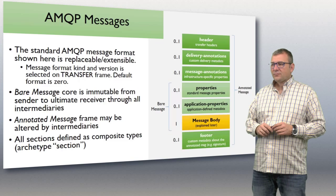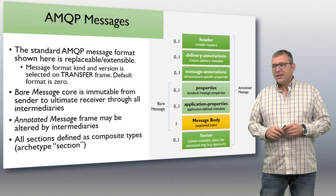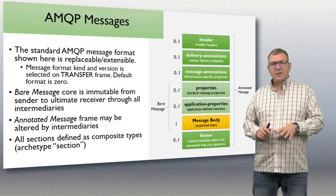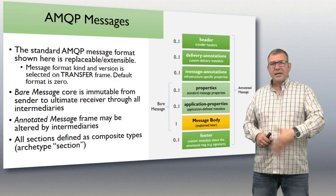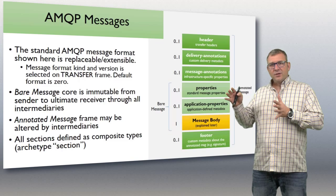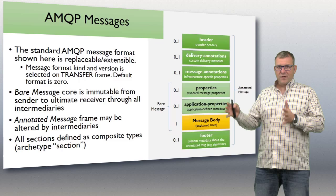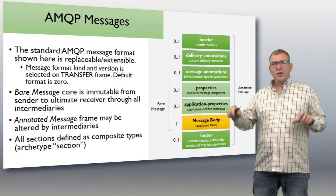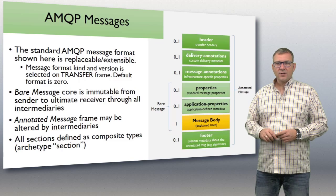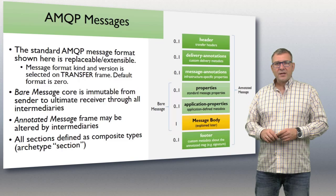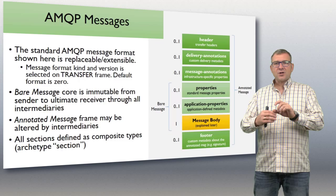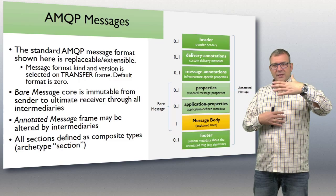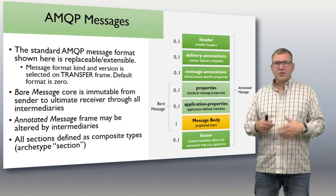An AMQP message has a standard message format, and the message format shown here is actually replaceable and extensible. Extensibility in AMQP goes so far that the standard message format can be swapped out for a different one. Foundationally, there's a frame transfer protocol under the covers, and a message transfer protocol above that, created by having transfer frames followed by the message per se — the payload, this AMQP message structure.